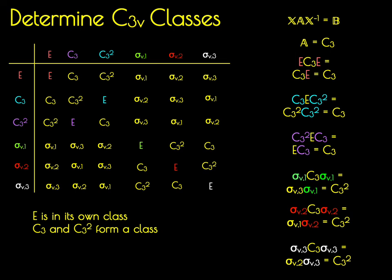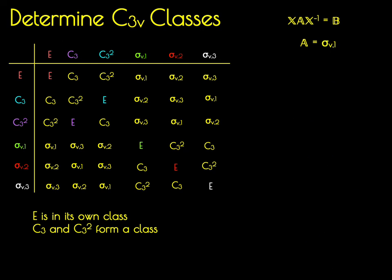So now we're going to move along to our first mirror plane, sigma V1. Going through and looking at A equaling sigma V1, similarity transform of sigma V1 by E is sigma V1. Similarity transform of sigma V1 by C3 is sigma V3. Similarity transform of sigma V1 by C3 squared is sigma V2.